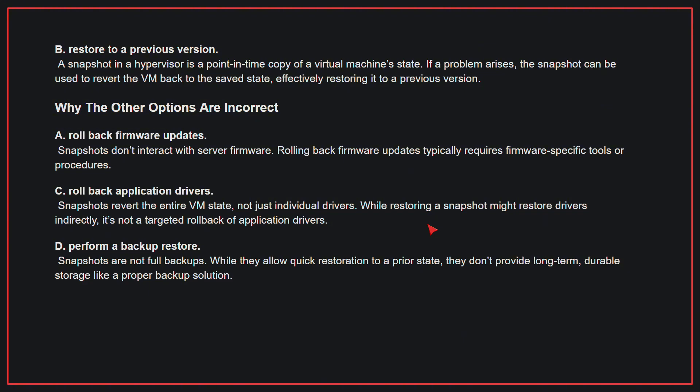Why the other options are incorrect: A, Rollback firmware updates — snapshots don't interact with server firmware; rolling back firmware updates typically requires firmware-specific tools or procedures. C, Rollback application drivers — snapshots capture VM state but are not the standard method for rolling back application drivers specifically. Therefore, the correct answer is B: Restore to a previous version.